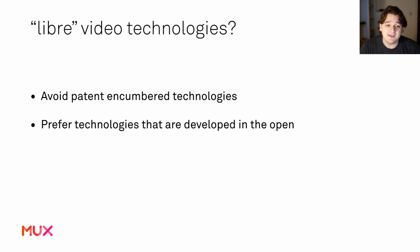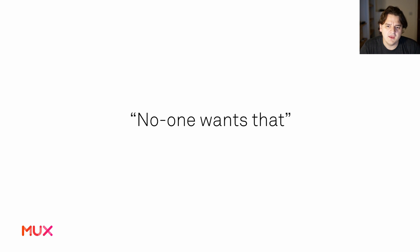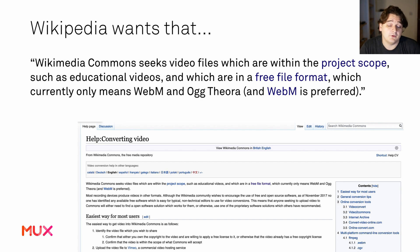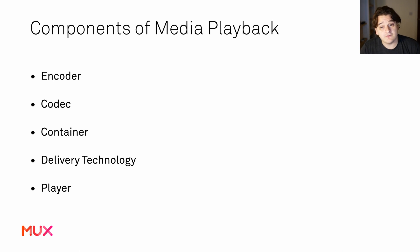My definition of libre video technologies means avoiding patent-encumbered or licensable technologies wherever possible, and preferring technologies developed in the open — I love working in open source communities and open standards. You might fairly say nobody wants that, but here's someone who does: Wikipedia only ingests and delivers files in free formats, specifically WebM and Ogg/Vorbis — this is totally how Wikipedia does video today.